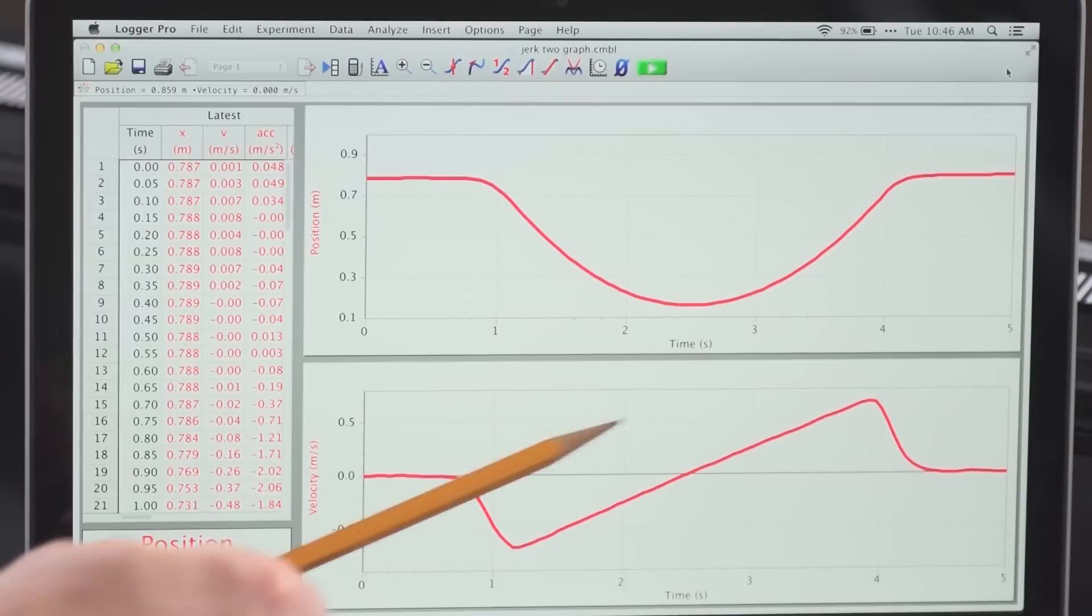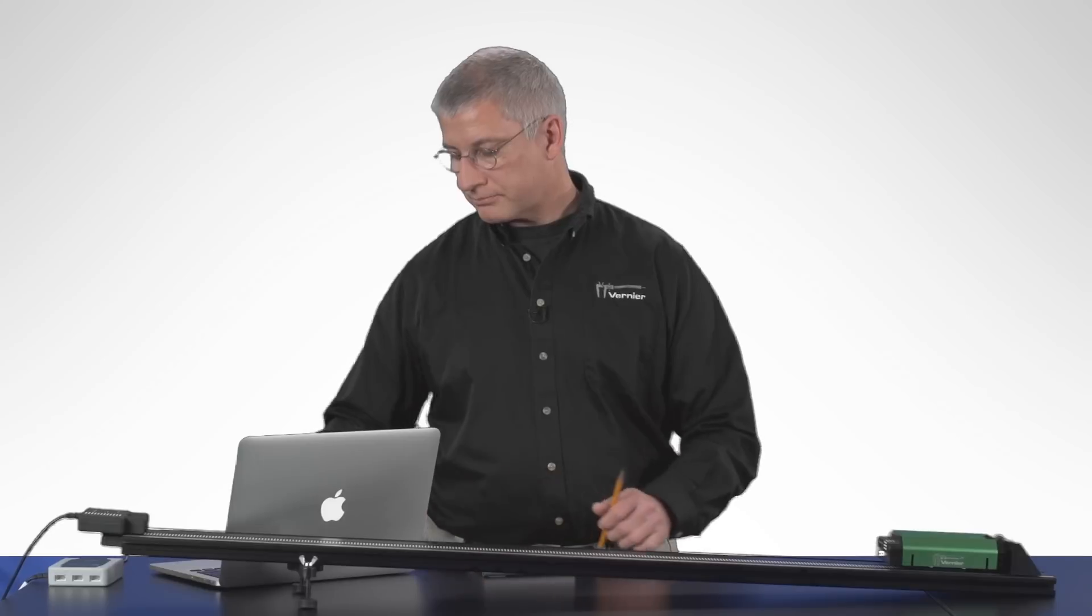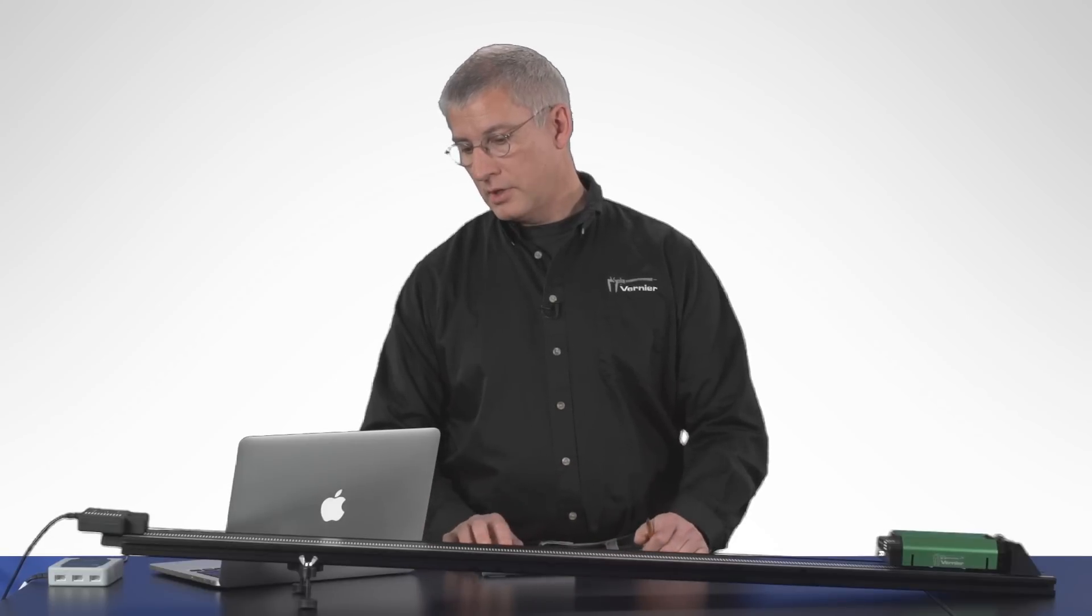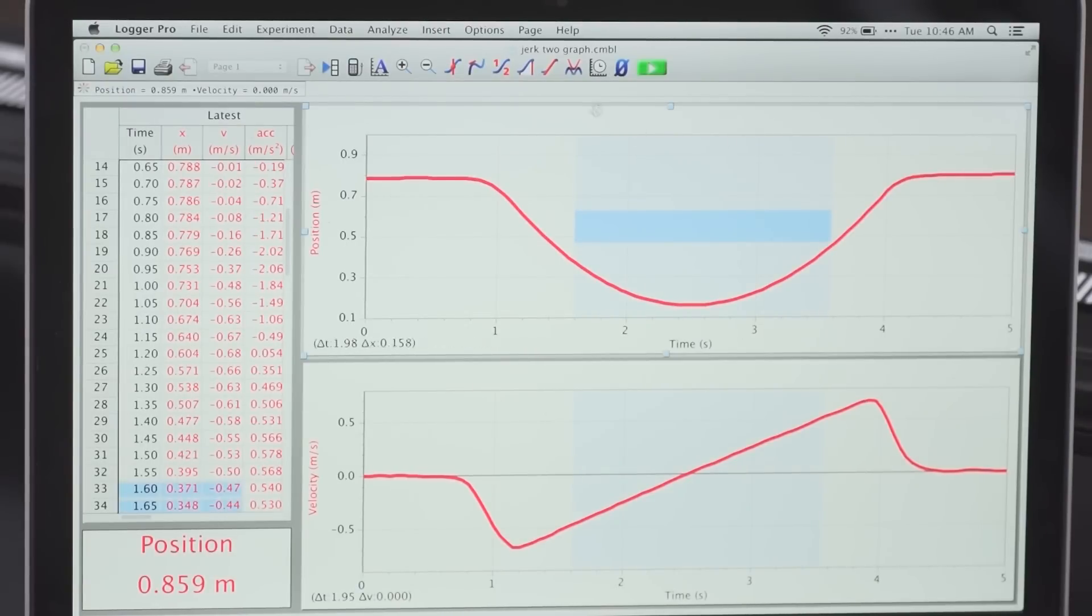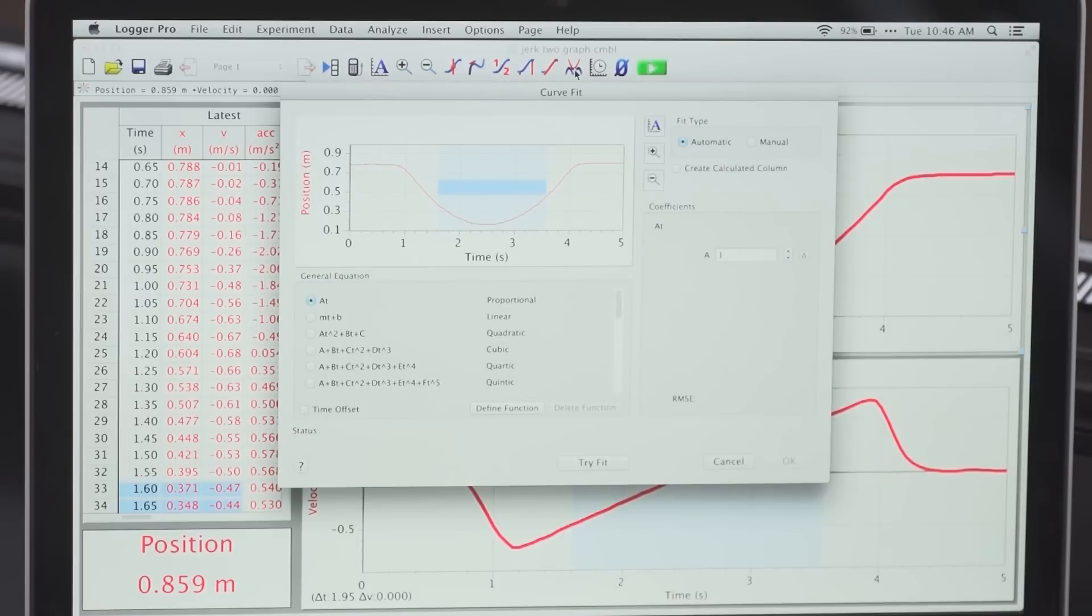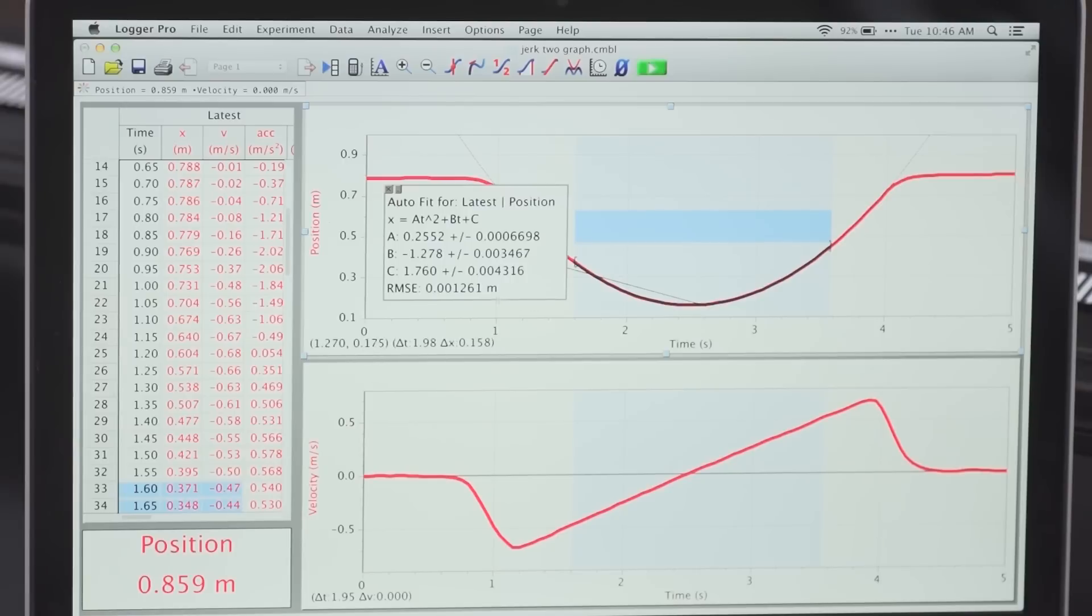The velocity graph is showing a nice linear portion corresponding to when the cart was freely rolling. I can do some analysis here. Let me select a region of the graph, and I'm going to choose to do a quadratic fit here. And indeed, my fit is quite good.